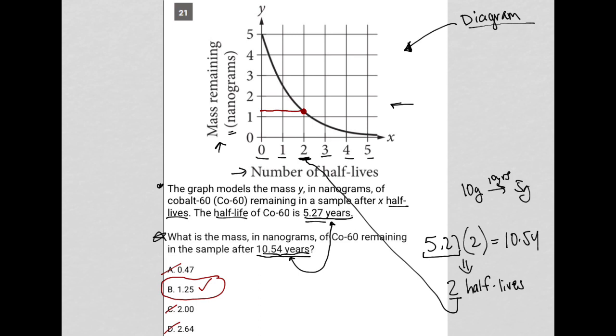The relationship was between the 5.27 years for a half-life, recognizing that when you multiply that by 2, that is the 10.54 years, also recognizing that that 2 represents the 2 here on the graph of the number of half-lives, and then utilizing the graph to figure out how many nanograms remain.